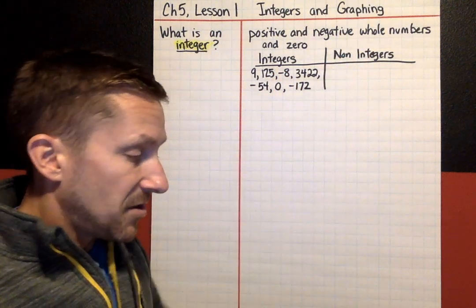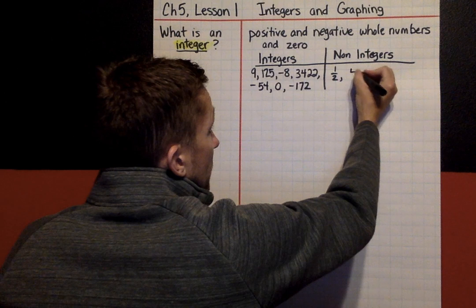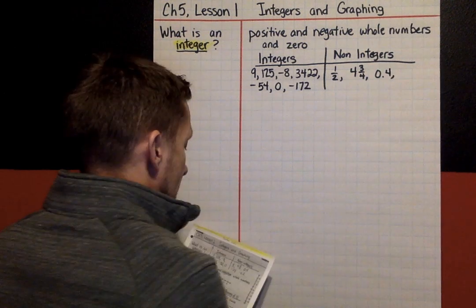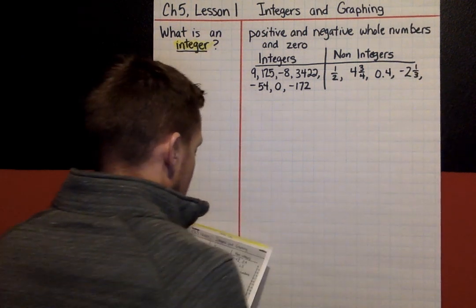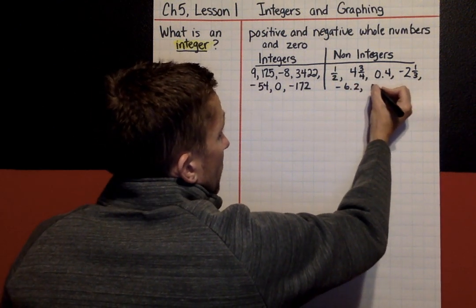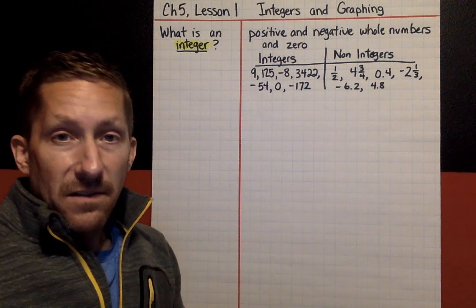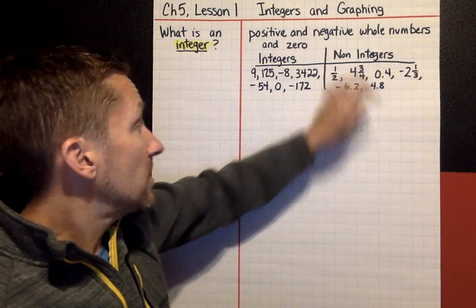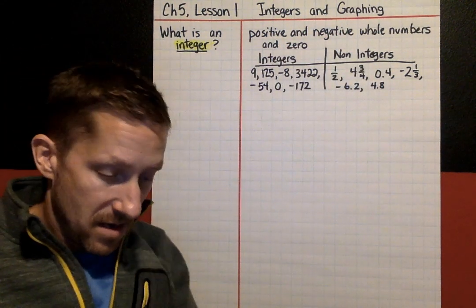Now I'm going to give you some examples of non-integers. One-half is not an integer. Four and three-fourths is not an integer. 0.4 is not an integer. Negative two and one-third is not an integer. 4.8 is not an integer. A non-integer is going to have a fraction or a decimal part.